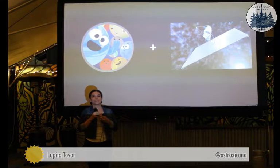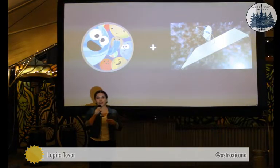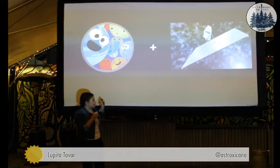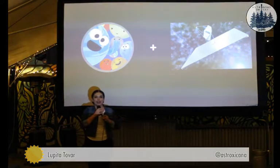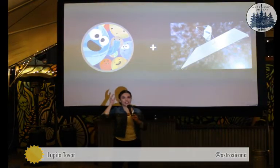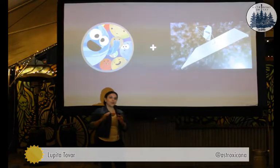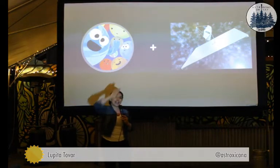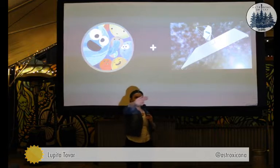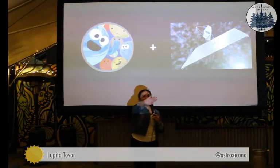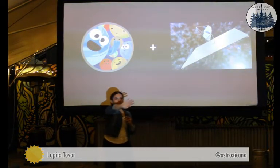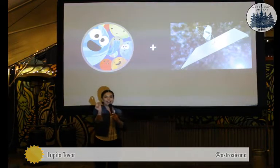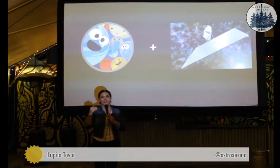How does the coronagraph work? Similar to the image of the eclipse — how the moon blocked the sun — it does just that. Another analogy is using your hand to block the sun, or I can use my hand to block the light on this projector right now. You block the starlight, and that way you're able to see the little planets that are next to or closest to the star.